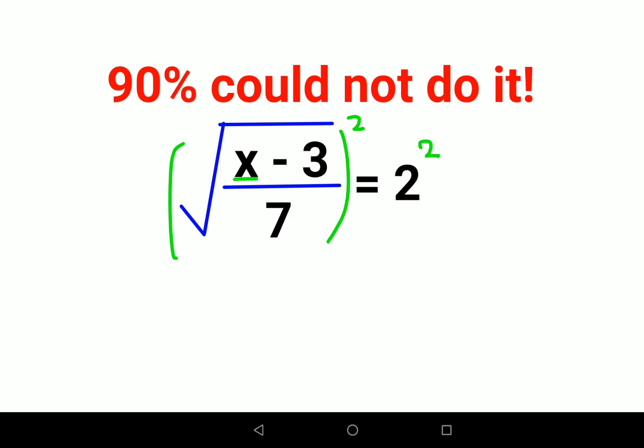So we can say therefore (x - 3)/7 = 4. Now next thing what you should do is you will multiply both sides by 7.